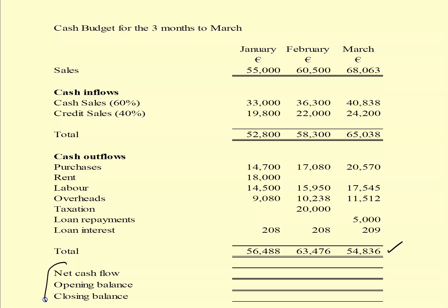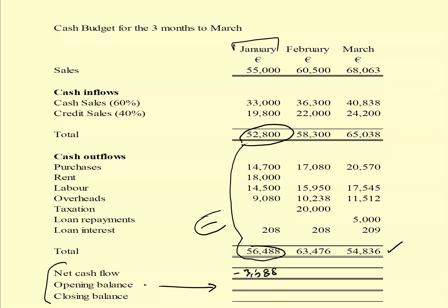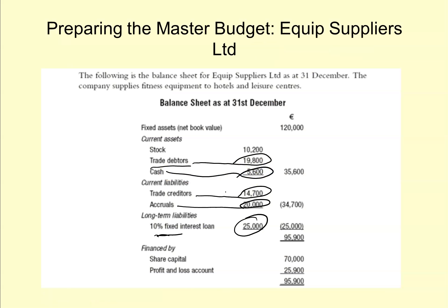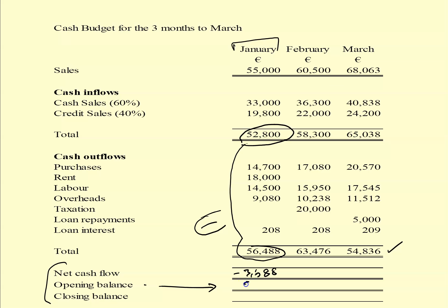The last section of the cash budget has three rows: net cash flow, opening balance and closing balance. The net cash flow is total cash inflows minus cash outflows; for January this gives minus 3,688. The opening balance is the cash figure from the 31st December balance sheet, which is 5,600 - the closing balance at 31st December becomes the opening balance on 1st January.